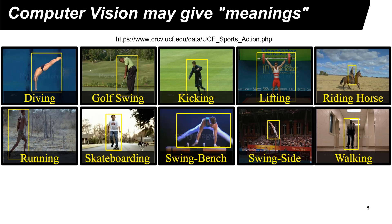Let's consider another example. We want to use computers to help us understand the meaning of video data. Each image shows a person doing some kind of sport, such as playing golf or running. Understanding these actions may seem easy for humans, but for computers these problems can be very difficult.